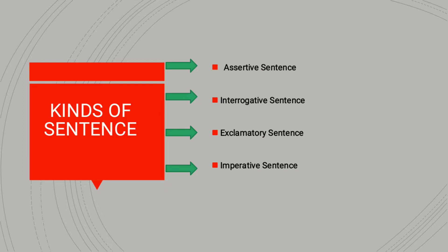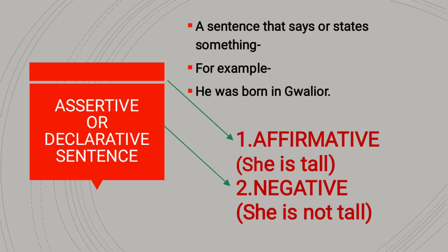Now let's understand different kinds of sentences. There are mainly four kinds of sentence: first is assertive sentence, then interrogative sentence, then exclamatory sentence, and last one is imperative sentence.